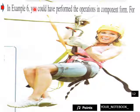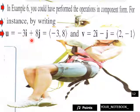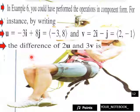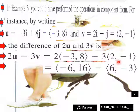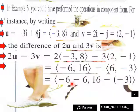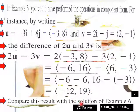Another notebook entry: in Example 6, you could have performed the operations in component form. For instance, write u equals negative 3i plus 8j as the component vector negative 3, 8, and v equals 2i minus j as the component vector 2, negative 1. Then 2u minus 3v equals 2 times (negative 3, 8) minus 3 times (2, negative 1), which equals negative 6, 16 minus 6, negative 3. Combining like terms gives negative 12, 19.